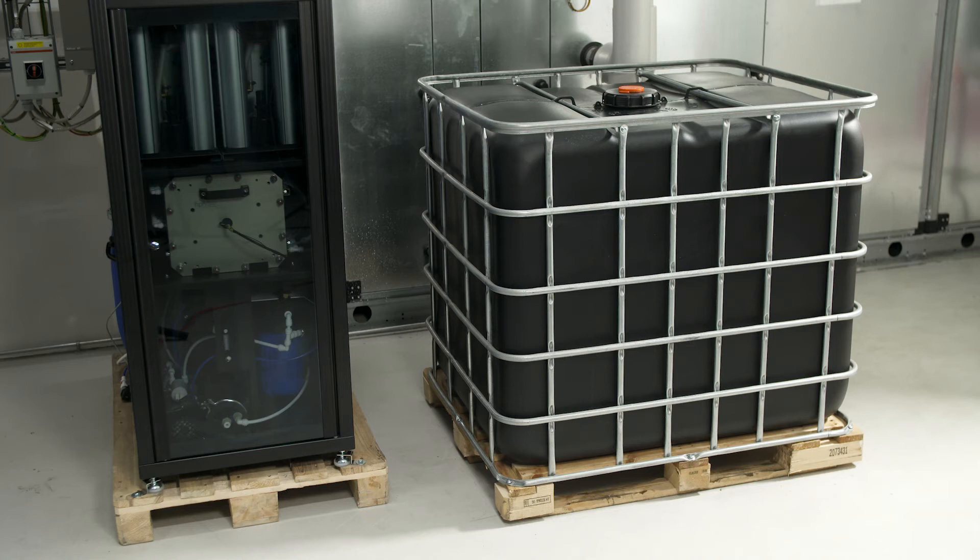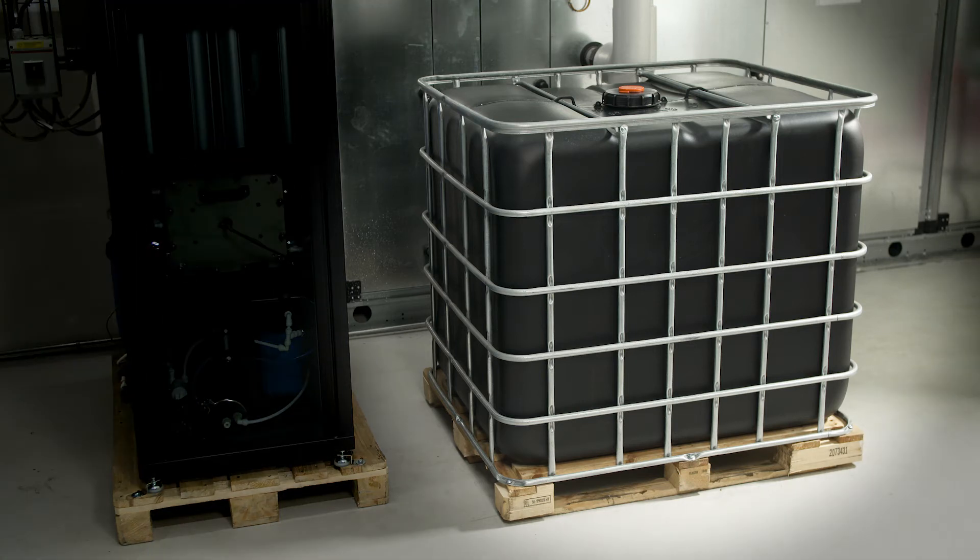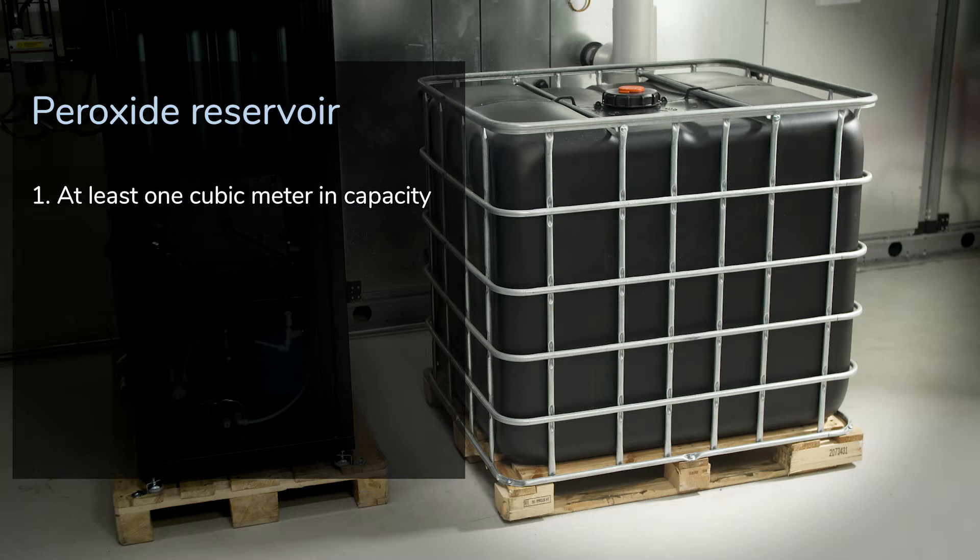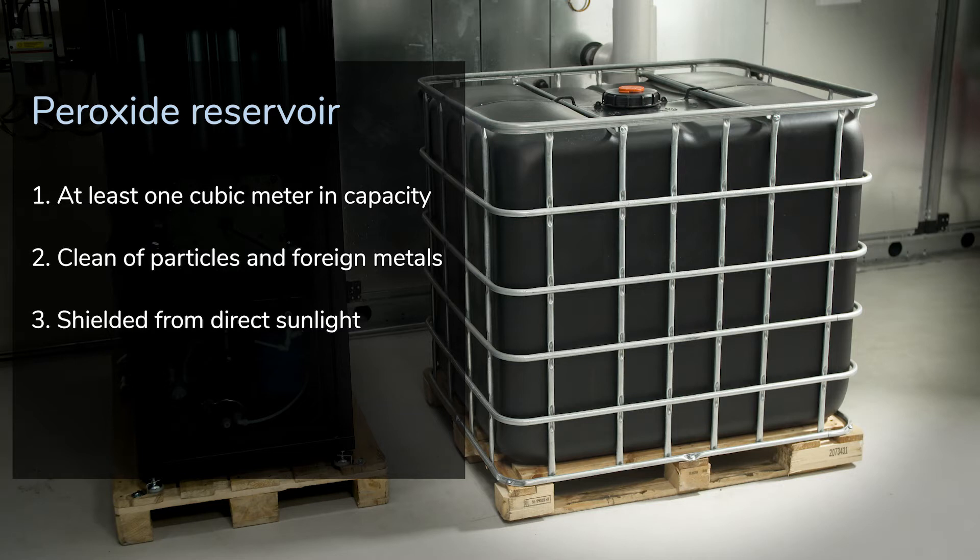Let us start with preparing the peroxide reservoir in three steps. It should have at least one cubic meter in capacity, be clean of particles and foreign metals, and it should be shielded from direct sunlight. The container walls should be of dark color with no openings for dust and metals.